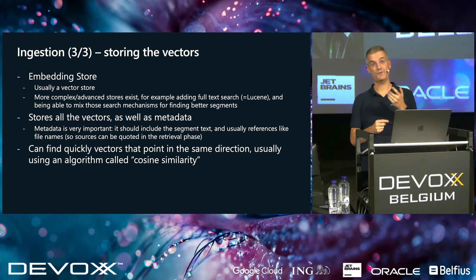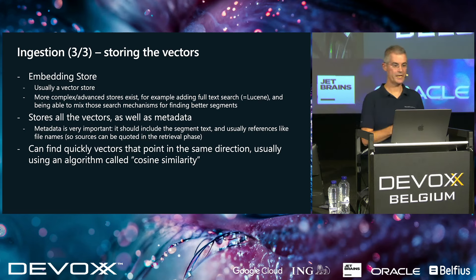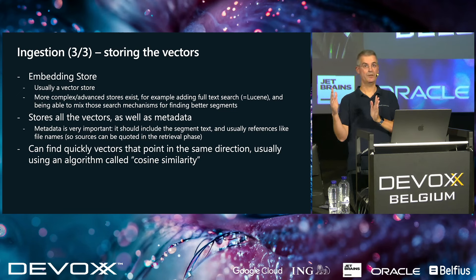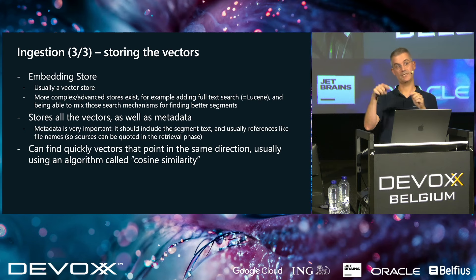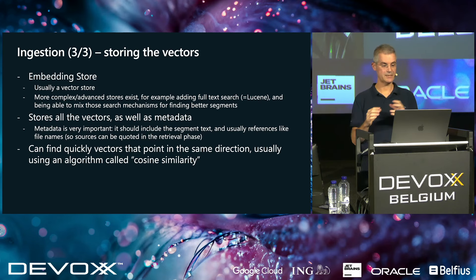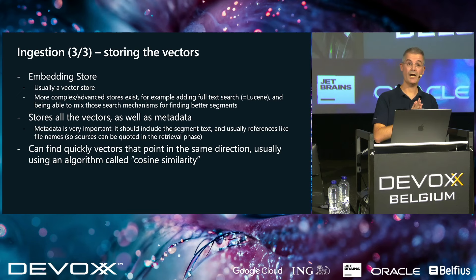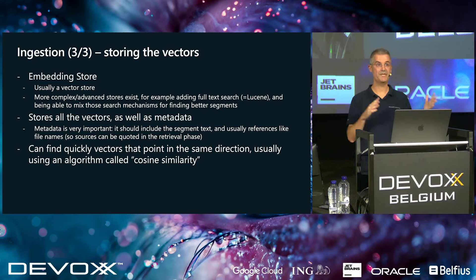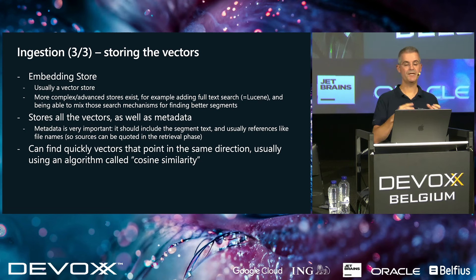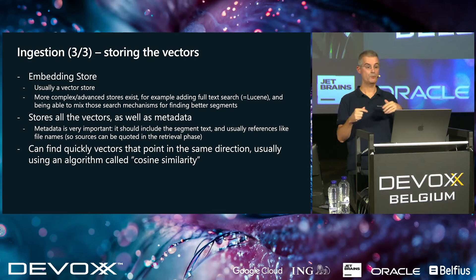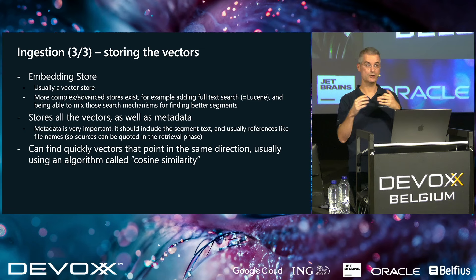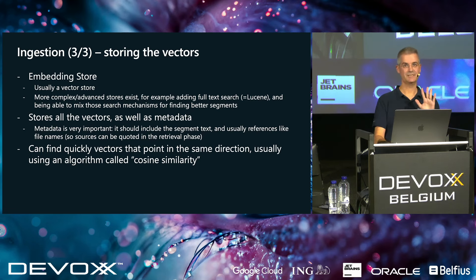In the vector store, you don't only store the vectors — you also store metadata. You want the text itself stored, and also references like which file the text came from. Because usually when you use an LLM, you want some references: 'here is my answer because I saw it in that document.' There are also more advanced vector stores that use tools like Lucene for full-text search to find better segments, and then match scores to find the best documents for a given question.